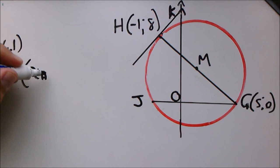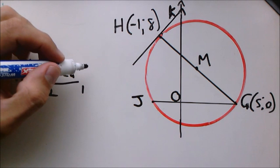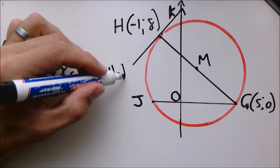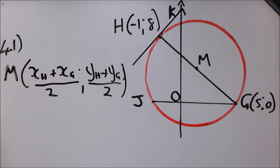So M will be (xH + xG)/2 and (yH + yG)/2. Remember to put your equal sign before the M coordinate. Remember this is a single statement.